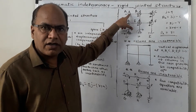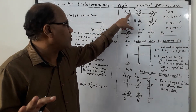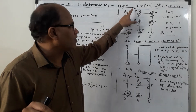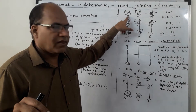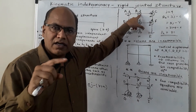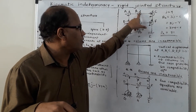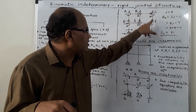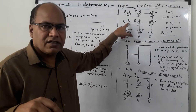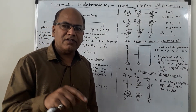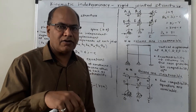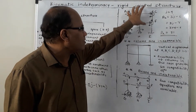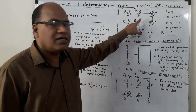At joint A, which is a rigid joint, 3 displacement components are possible: the horizontal displacement component, the vertical displacement component, and the rotation. At joint B, which is again a rigid joint, 3 displacement components, and 3 displacement components at C. As there are 6 number of rigid joints and 3 displacement components can happen at each, the total number of displacement components for these 6 rigid joints is equal to 18.